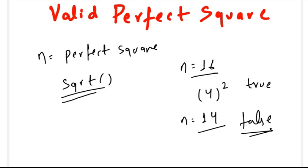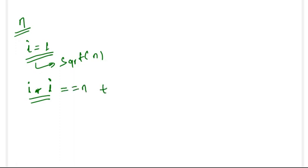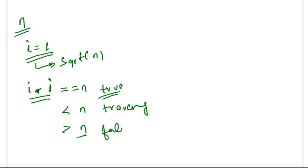Let's see how we will solve this. We try to find the square root of n. We run a loop starting from i equals 1, and every time we check whether i is a candidate for the square root of n. We compute i squared: if i squared equals n, we return true. If i squared is less than n, we keep traversing. If i squared is greater than n, we return false, because if n were a perfect square we would have found the answer by now.